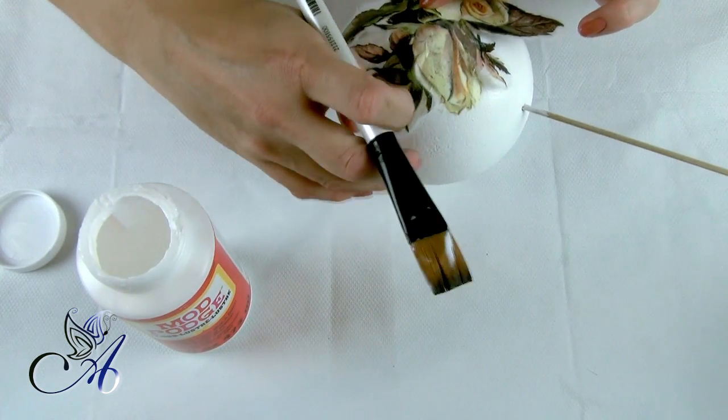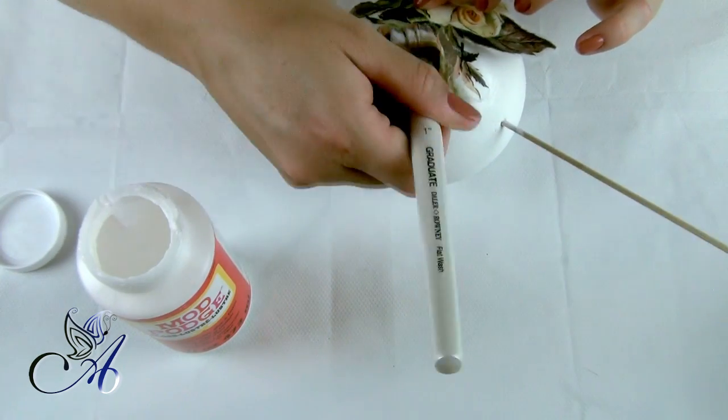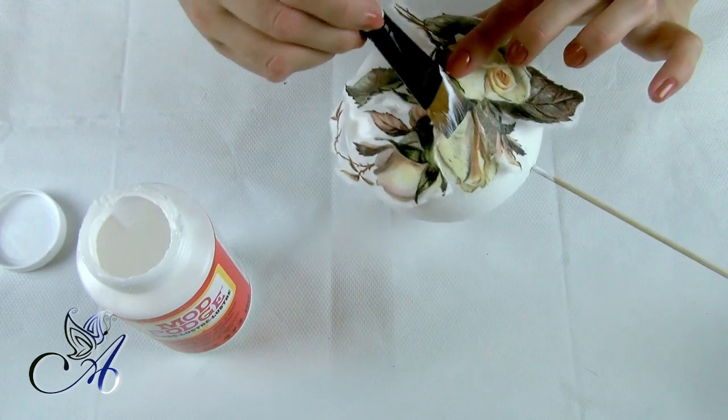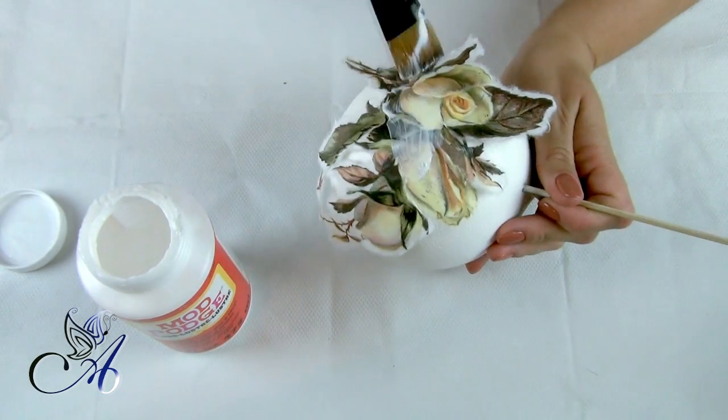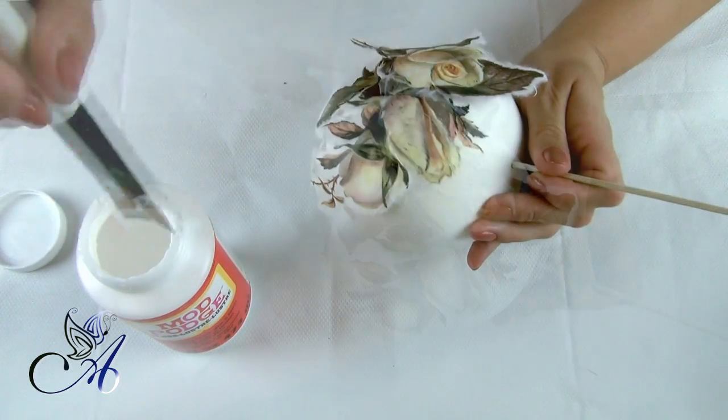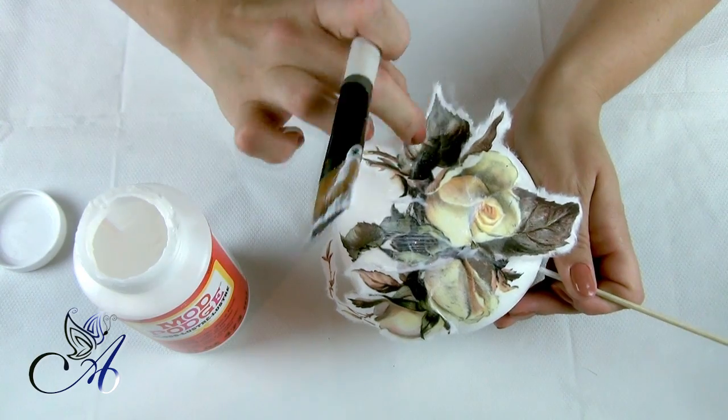I know that some people don't apply glue under rice paper, but I think this is a huge mistake. If rice paper is not glued properly, air bubbles will appear underneath as soon as it gets some humidity. So don't cut corners, do it the right way.